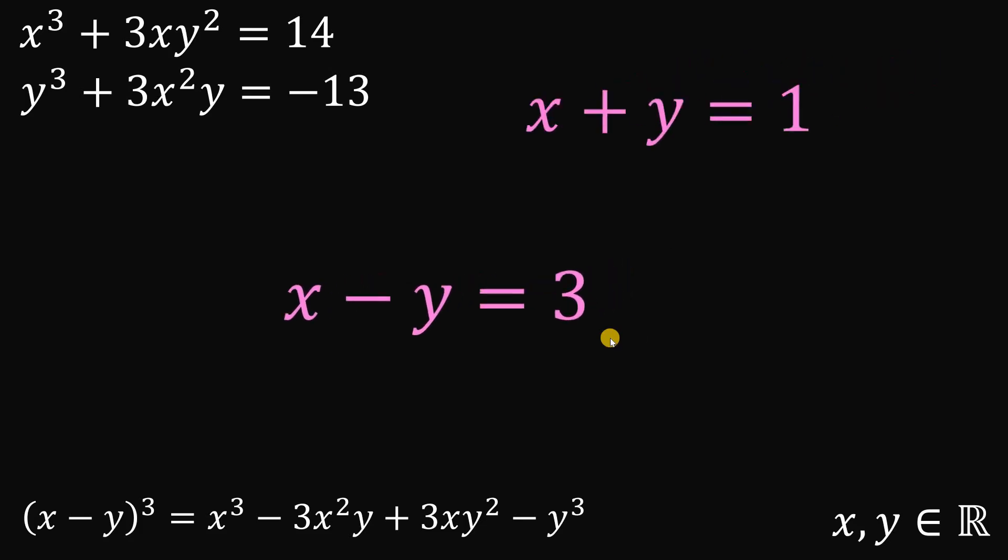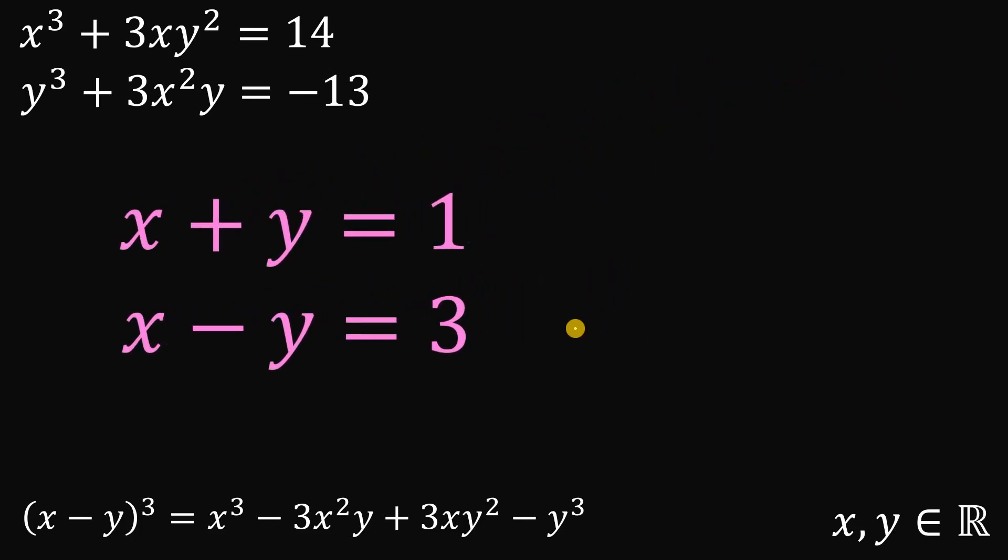Now, using these two equations, we can now solve for the values of x and y. So if we add these two equations, take note that we can eliminate the variable y. This is just equal to 0. So we have 2x = 1 + 3 = 4. So to solve for the value of x, divide both sides by 2. 4 divided by 2 is just 2.